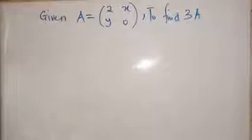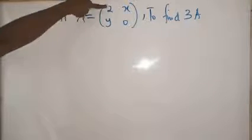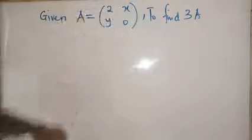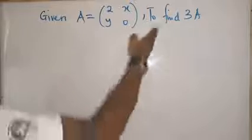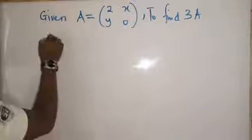In this particular question, we are given a matrix A to be 2, X, Y, and 0. That's a 2 by 2 matrix. And we have to find 3A. That means we are multiplying the matrix.